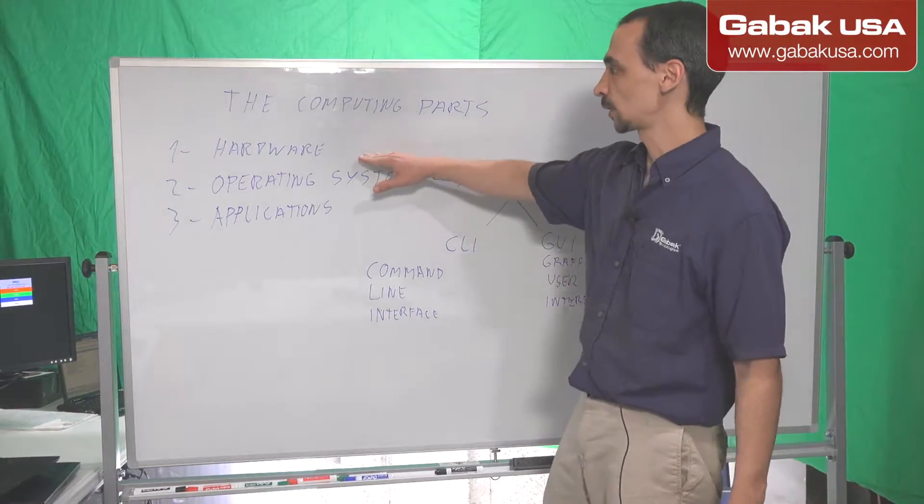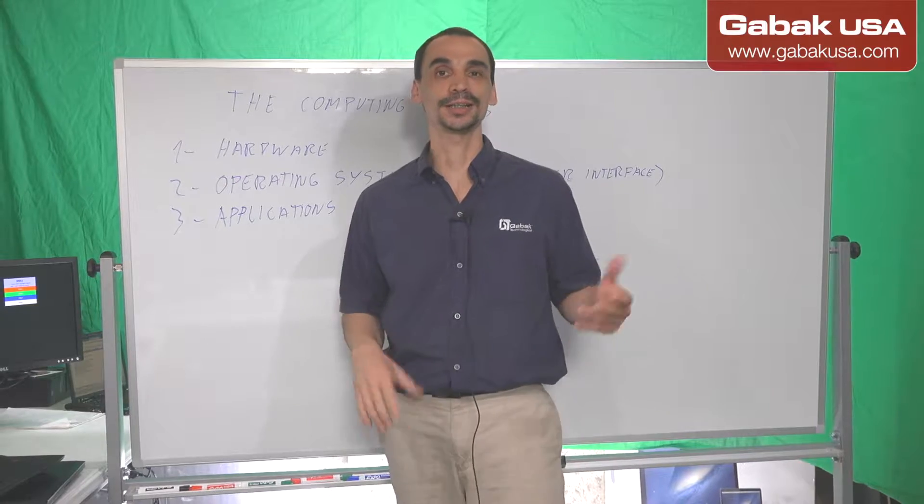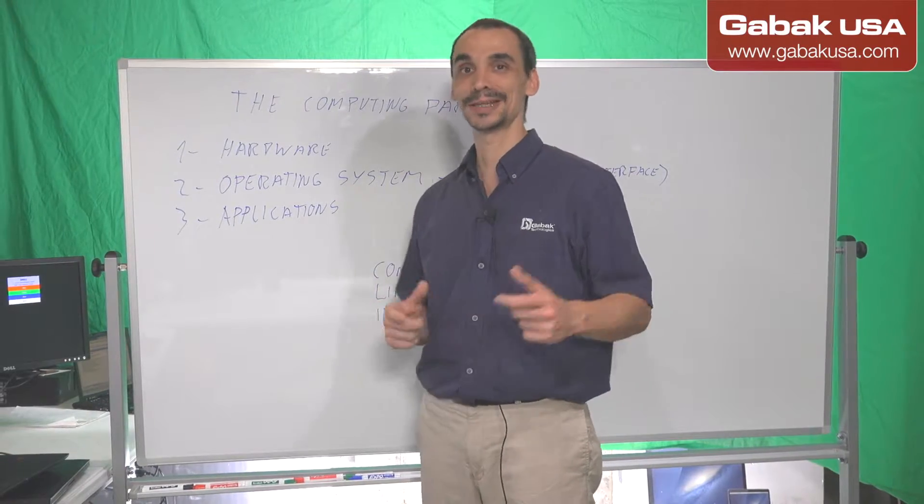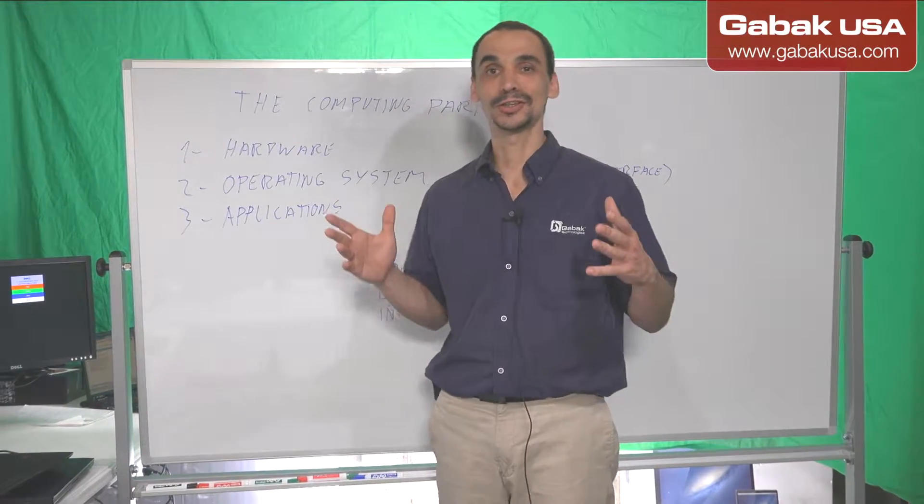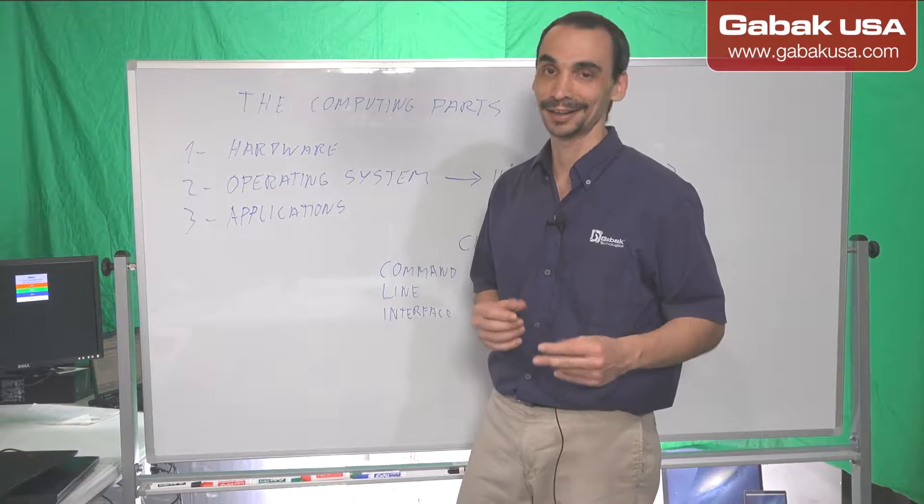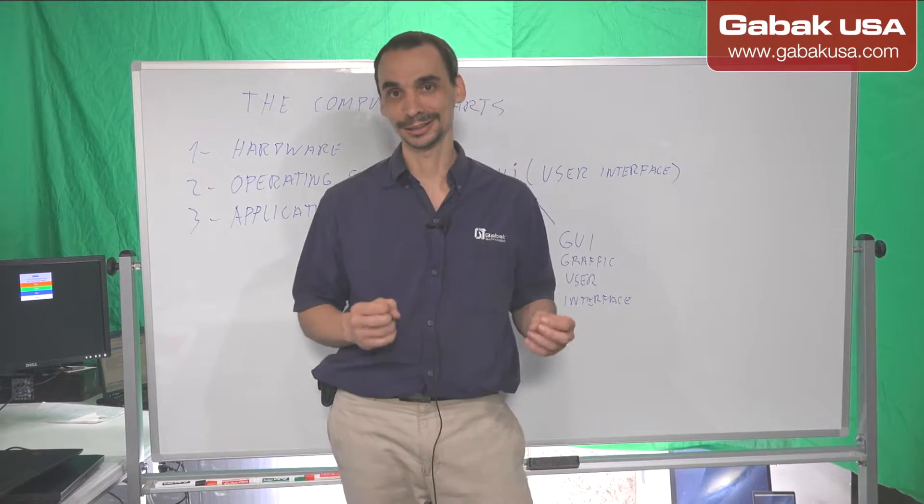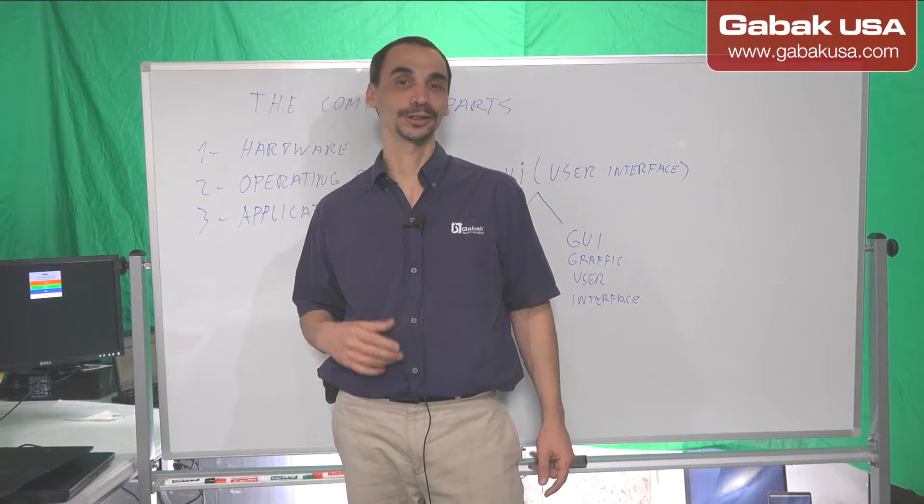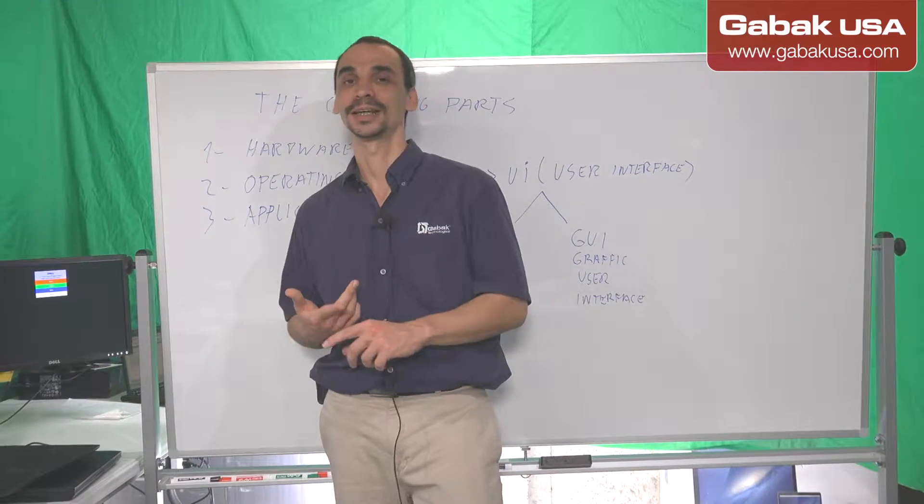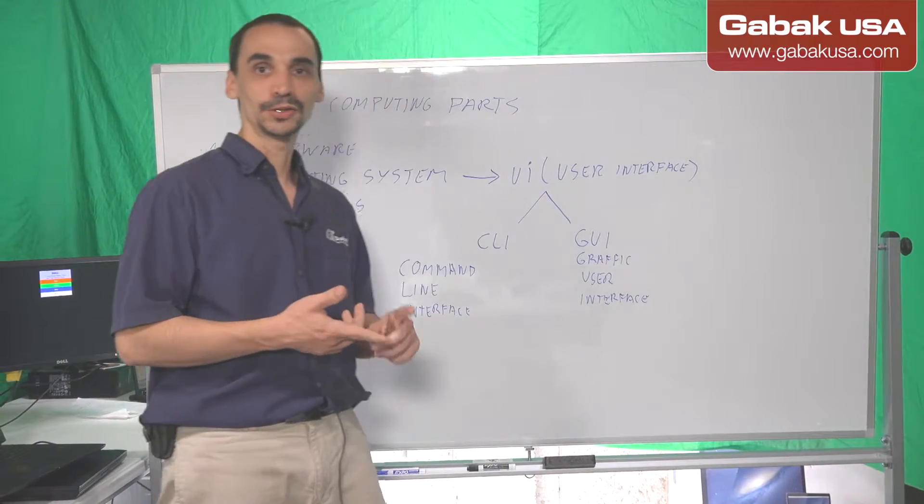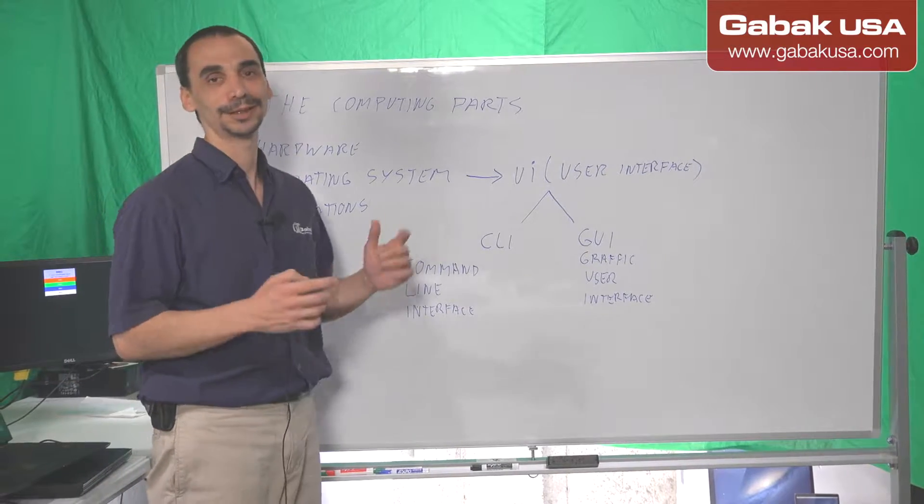So we're going to talk about hardware. Hardware is pretty easy. It could be a notebook, it could be any computer. So it's the things that you can touch, it's the tangible stuff. That is the hardware. Like I said before, it could be a computer, notebook, cell phone, tablet, whatever.